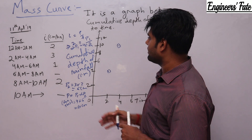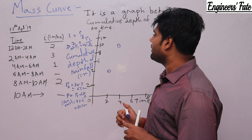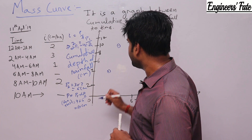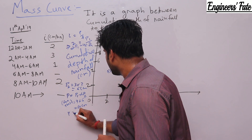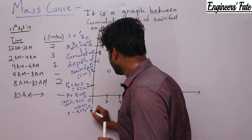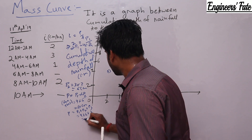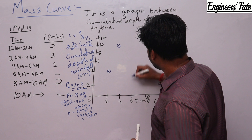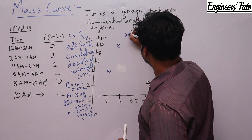For the next interval (4 am to 6 am), intensity is 1 cm/hr so P3 = 1 × 2 = 2 cm. Cumulative depth = P1 + P2 + P3 = 4 + 6 + 2 = 12 cm. The coordinate at 6 hours is 12 cm.